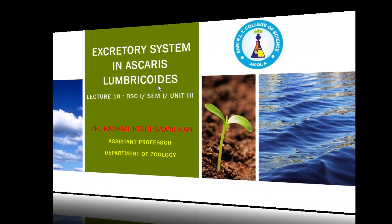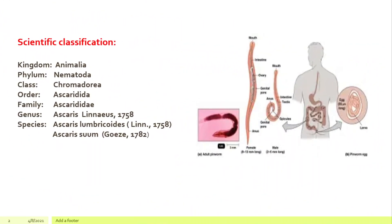Let's see the scientific classification of Ascaris lumbricoides. As in every lecture, I give this scientific classification because by reading it repeatedly, you will all be able to learn the classification. Kingdom Animalia, phylum Nematoda, class Chromaduria, order Ascaridida, family Ascarididae, genus Ascaris, and species lumbricoides, discovered by Linnaeus in 1758.